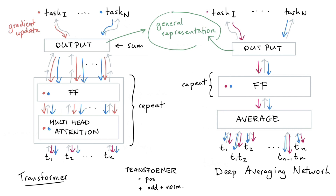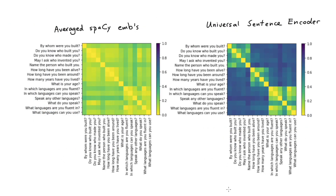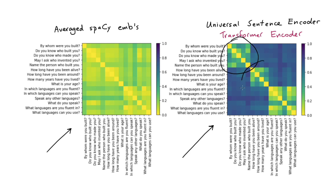With this high-level overview out of the way, let's look at the effect you can expect when using these embeddings. Remember that similarity chart? Here's what the averaged spaCy embeddings tell us about clustering. Now compare that to embeddings from the Universal Sentence Encoder — using the transformer encoder here, though the deep averaging network gives something very similar. Note the clusters that appear — that might be exactly what you want. These embeddings seem to capture something about the entire sentence, as opposed to merely averaging individual word representations.